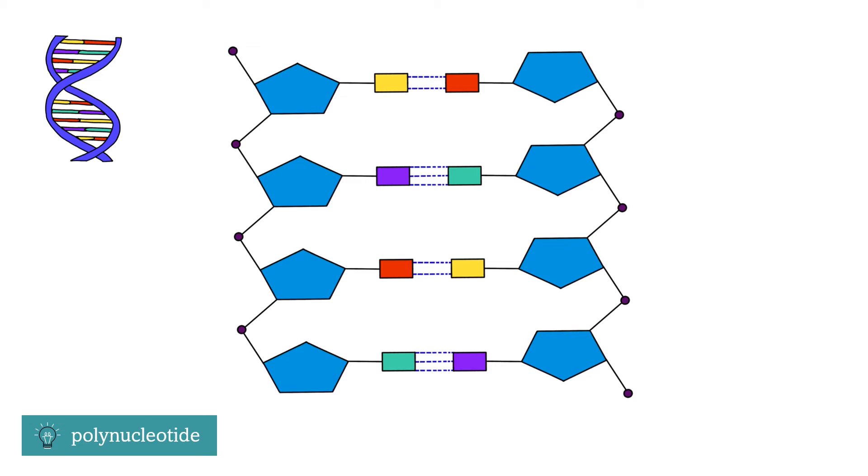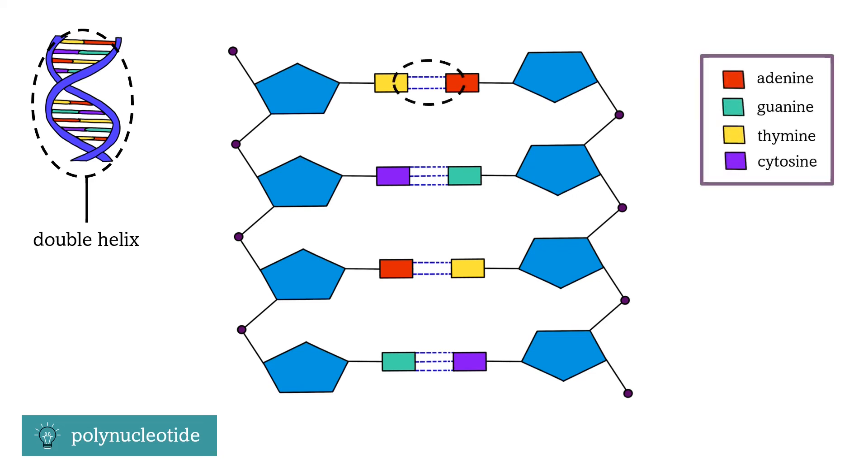DNA consists of two polynucleotide chains that form a structure called double helix. This is possible because the bases of the opposite chains pair together.